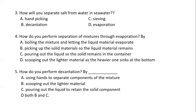Number 5. How do you perform decantation? By: A. Using hands to separate components of the mixture. B. Scooping out the lighter material. C. Pouring out the liquid to retain the solid component. Or D. Both B and C.